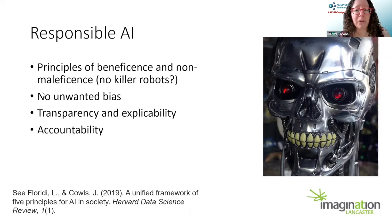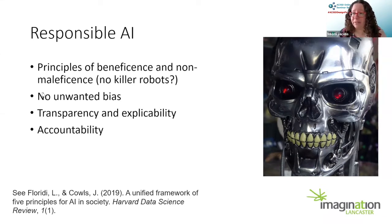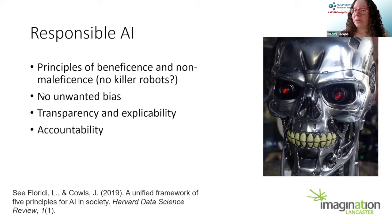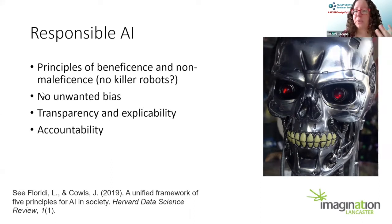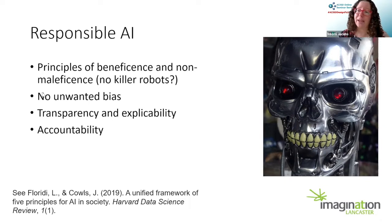We need to think about bias, which is often inherent in such systems because of how training data is used. As humans we're not unbiased either, and in such systems we might actually want some bias — we want it to make decisions based on what it sees. What we don't want is unwanted bias that is negative to society or that we don't even know about. That leads to the next principle: transparency and explicability — we need to understand and see what these systems are doing and how they're making decisions. And then accountability — we need to know who is responsible and what can be done when something goes wrong.